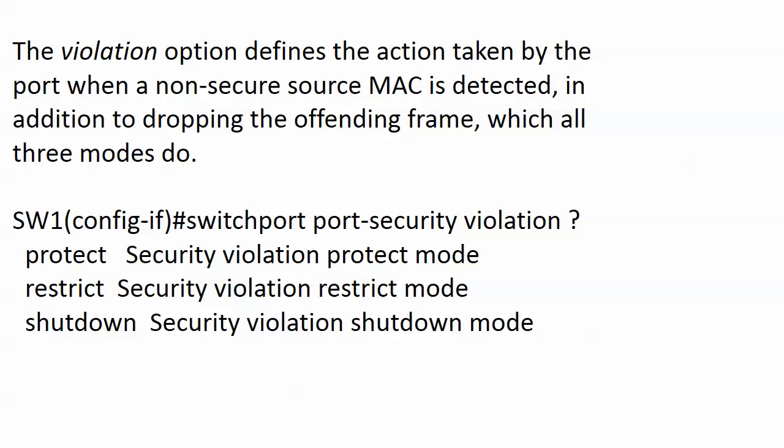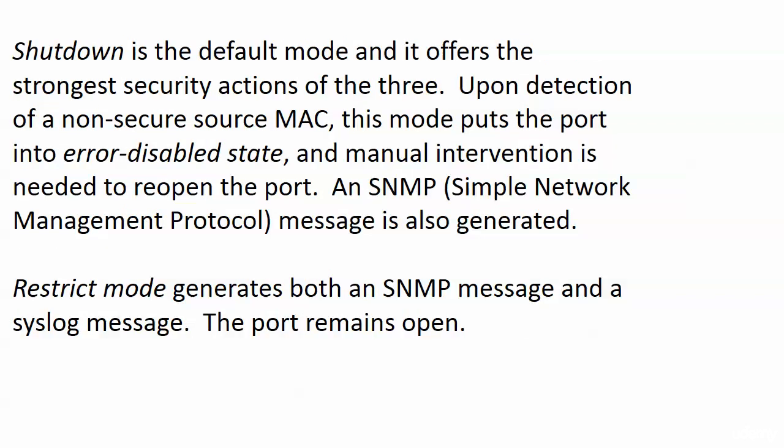The violation option is one we need to be all over, because it defines the action taken by the port when a non-secure source MAC address is detected. The three modes take different levels of action, but all three modes will drop the offending frame. The three modes are protect, restrict, and shutdown — and shutdown is the default, which we saw under security action in the previous video under show port security. Shutdown is the strongest security level, because when a non-secure source MAC comes in, this mode puts the port into error-disabled state.